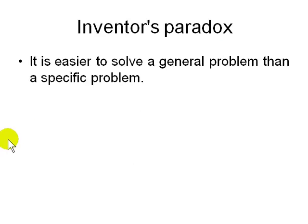There is also the inventor's paradox: it is easier to solve a general problem than a specific one. This is especially true in computer science — trying to create a specific tool to solve one problem is much harder than making a generic tool like a screwdriver, which can solve hundreds of problems.